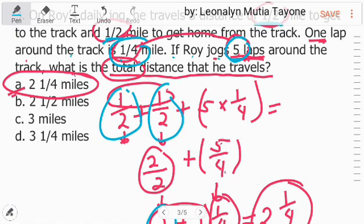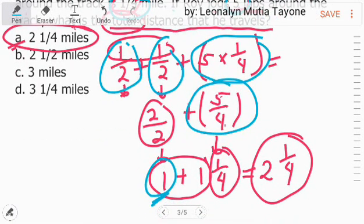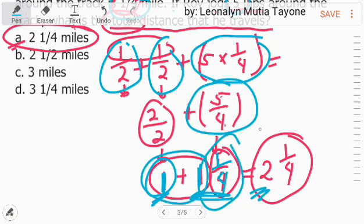Bali, 5, 1 fourth. So, itong 5 times 1 fourth and that is equivalent to 5 over 4. Si 5 over 4 na improper fraction can be converted into mixed numbers which is, ang answer dito ay 1 and 1 fourth. So, itong 1 natin dito at saka si 1 and 1 fourth na itong whole number na 1, i-add na natin yan and that is 2. So, kopyahin lang si 1 fourth. So, ang sagot natin dito ay 2 and 1 fourth. Letter A.